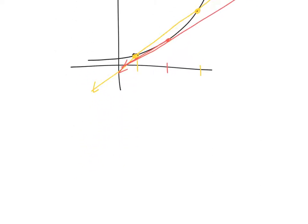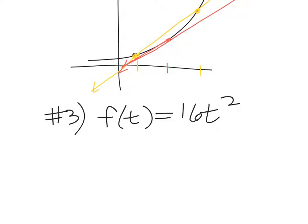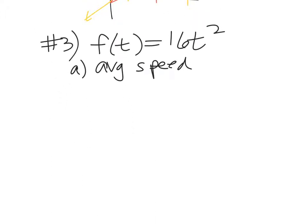Problem three: a rock breaks loose from a tall cliff and its position is given as f of t equals 16t squared. We're going to find: A, the average speed over the first two seconds; and B, the speed at exactly t equals two seconds.